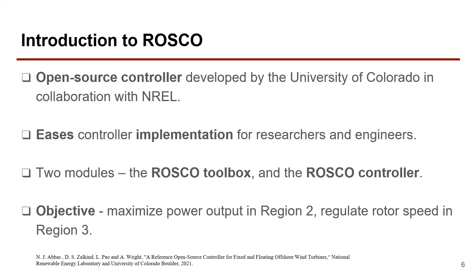ROSCO, which stands for Reference Open Source Controller, was developed by the University of Colorado in collaboration with NREL. The controller provides tools to ease controller implementations for wind turbine researchers and engineers. The primary objective of the controller is to maximize power output in Region 2 and to regulate rotor speed in Region 3. ROSCO communicates with OpenFAST to provide control commands to a wind turbine model. Though ROSCO can control many aspects of a wind turbine, this project is interested in its blade pitch control capabilities. ROSCO consists of two primary modules: the ROSCO toolbox and the ROSCO controller. The toolbox is written in Python and is primarily for tuning the controller.